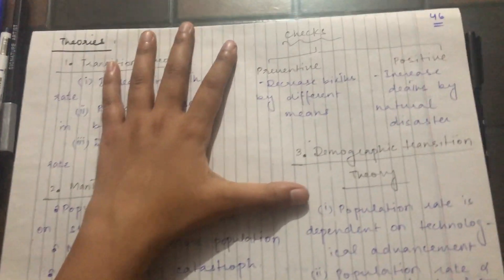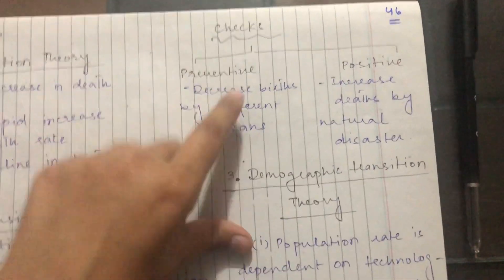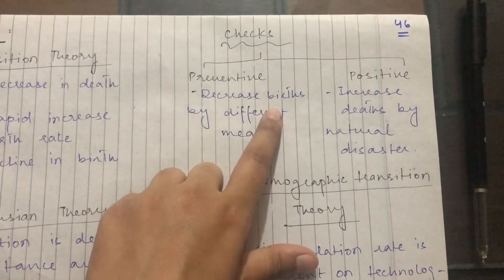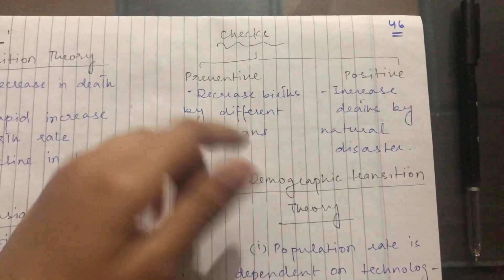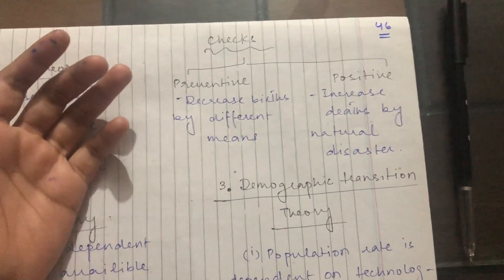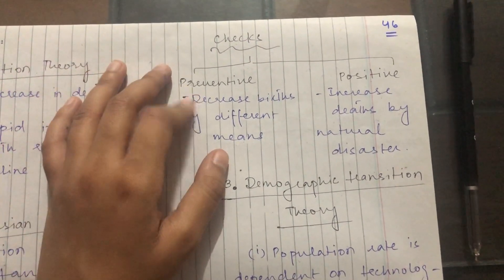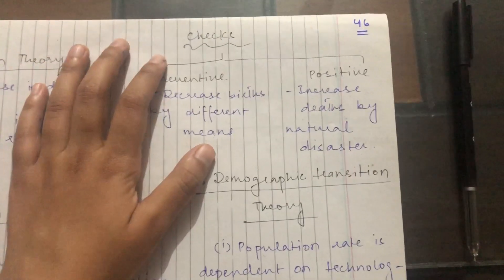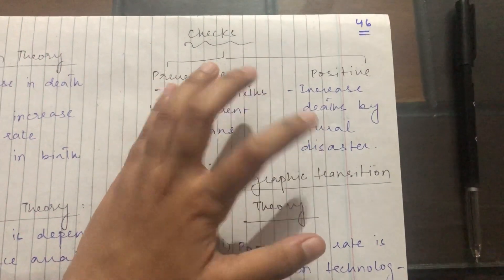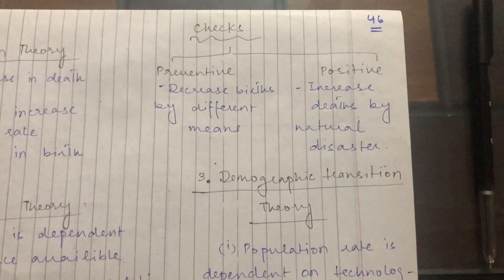In Malthusian theory, there are two checks on population. One is the preventive check, which is a decrease in birth rate by different means — we can provide awareness and sex education, or provide incentives and environmental costs to reduce births. The other is the positive check, which is an increased death rate caused by natural disasters. When the death rate increases, the population decreases.